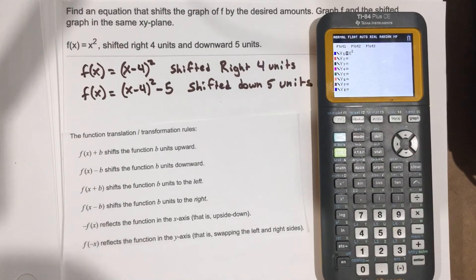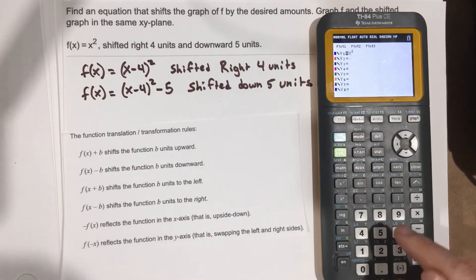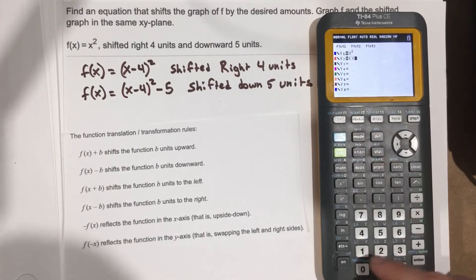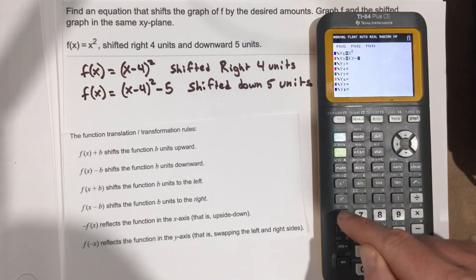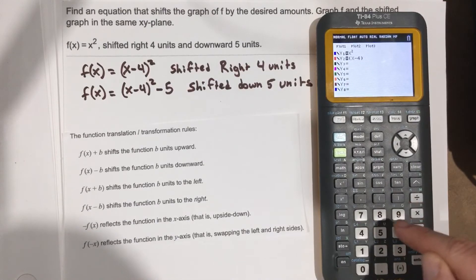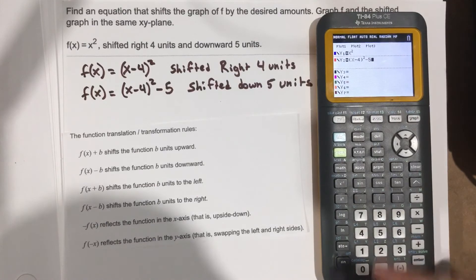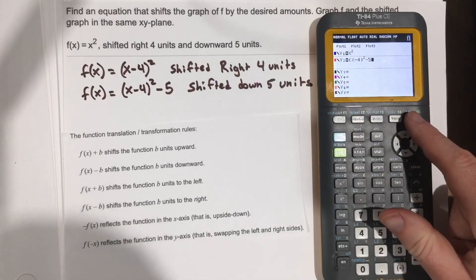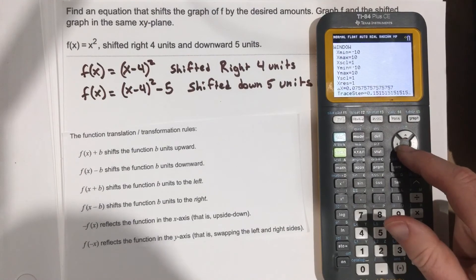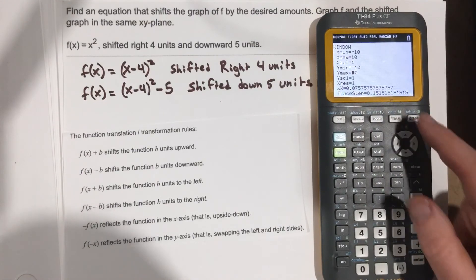So that's going to be in the blue. And this other one is going to be parentheses x minus 4, parentheses, squared, minus 5. I'm going to make sure the window, negative 10, 10, 1, okay, we're good. Graph.